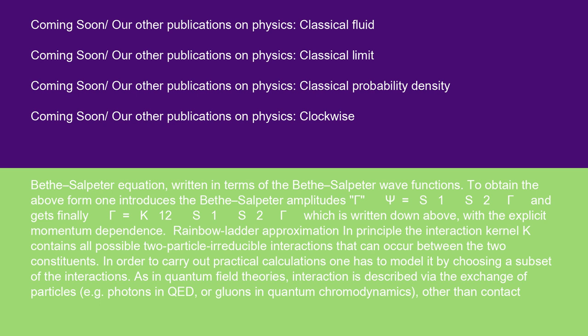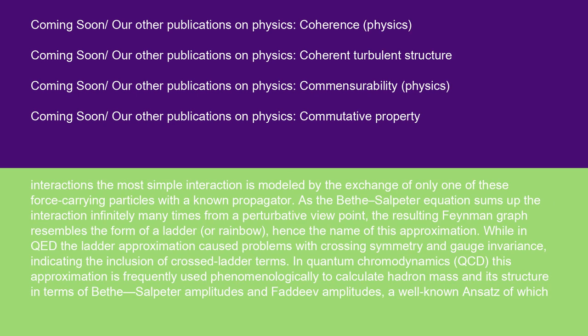Rainbow ladder approximation: in principle, the interaction kernel K contains all possible two-particle reducible interactions that can occur between the two constituents. In order to carry out practical calculations, one has to model it by choosing a subset of the interactions. As in quantum field theories, interaction is described via the exchange of particles, e.g. photons in QED, or gluons in quantum chromodynamics, other than contact interactions.